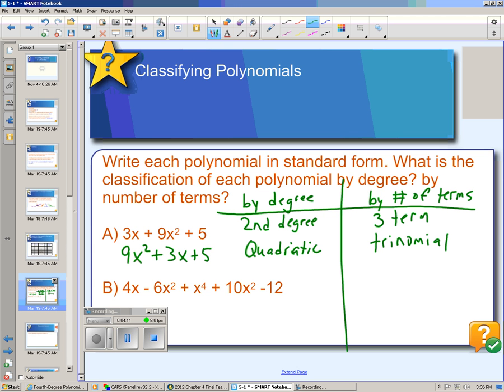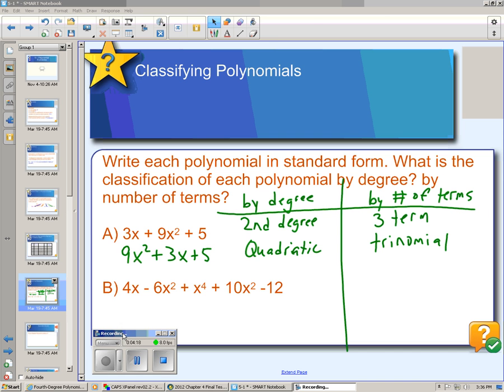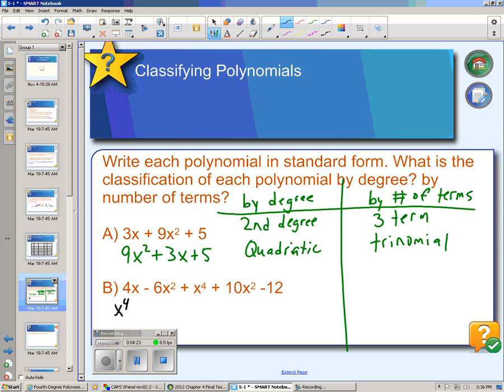In our second example, as we're trying to put this in standard form, we should also combine like terms. Our highest exponent is x⁴, so that goes first. There is no x³ term, but there are two x² terms, so we're going to combine these together. Negative 6x² plus 10x² would give us 4x². And then we can put our linear term next, 4x, and last, we'll put our constant term.